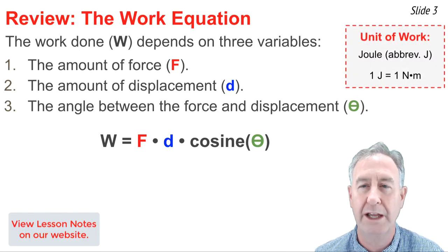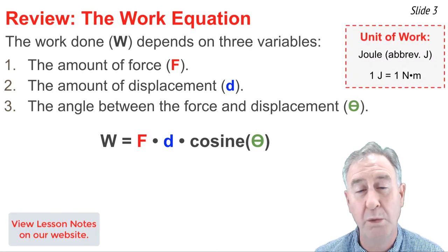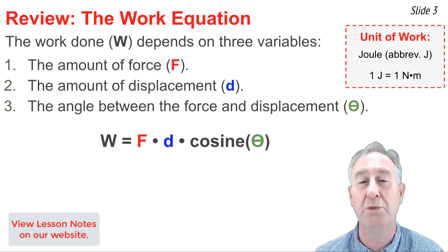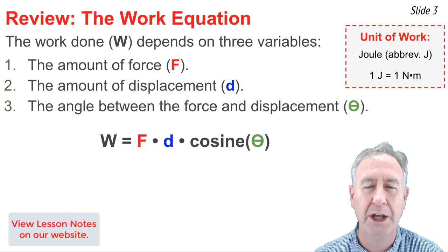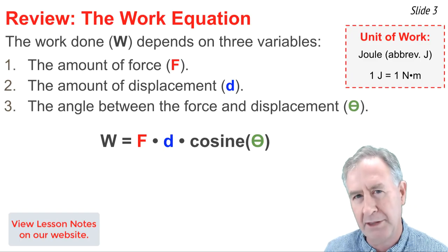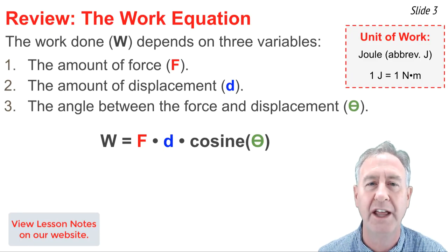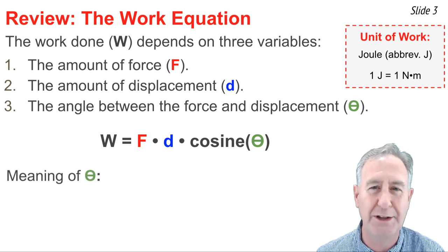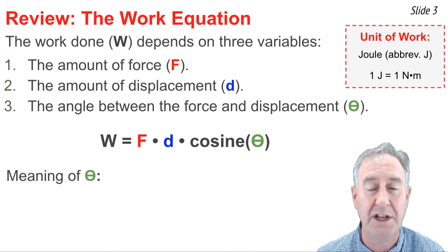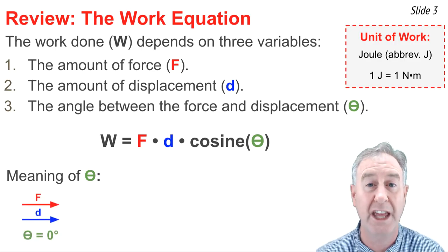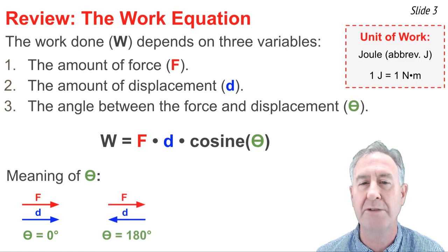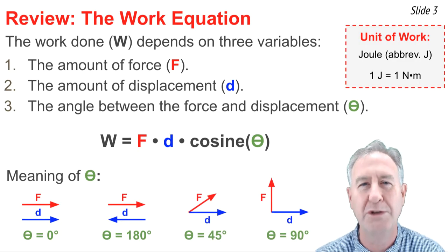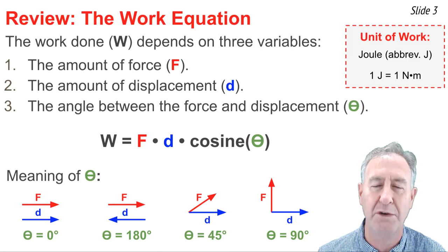The unit for work is the joule, abbreviated J, where 1 J equals 1 newton multiplied by 1 meter. Perhaps the most difficult thing about this equation is the angle theta. Theta is an angle measured between two vectors — the force and the displacement vector. If they're in the same direction, theta is 0 degrees. If they're in the opposite direction, the angle is 180 degrees. For any other angle, you simply measure the angle between the two vectors, and that's the value of theta.